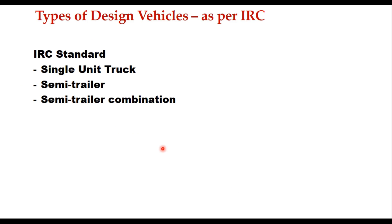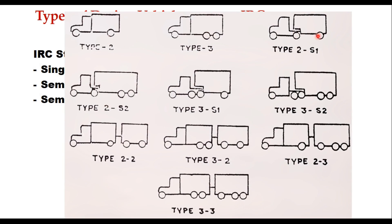IRC has standardized three types of vehicles: single unit truck, semi-trailer, and semi-trailer combination. So the design vehicle here is a truck, a semi-trailer, or a semi-trailer combination. IRC defines type 2 and type 3 trucks — where you have a single axle in the front and single axle in the rear, it is type 2; when you have a tandem axle at the rear, it is type 3. For trailer units, the number indicates the number of axles in the front vehicle and the rear vehicle. So type 3-2 means three axles in the front vehicle and two axles in the rear vehicle; similarly, it can be type 3-3.